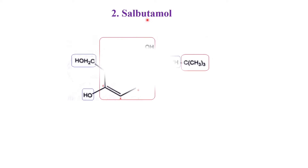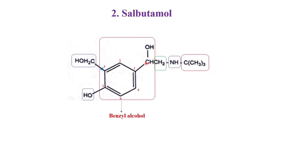Dear students, now we are going to see the synthesis of salbutamol. First you will see the structure of salbutamol. It has the parent nucleus as benzyl alcohol, and in the benzyl alcohol it has an alpha carbon. This alpha carbon is connected with the tertiary butyl amino methyl group, the fourth carbon is connected with a hydroxy group, and the third one is connected with a hydroxy methyl.